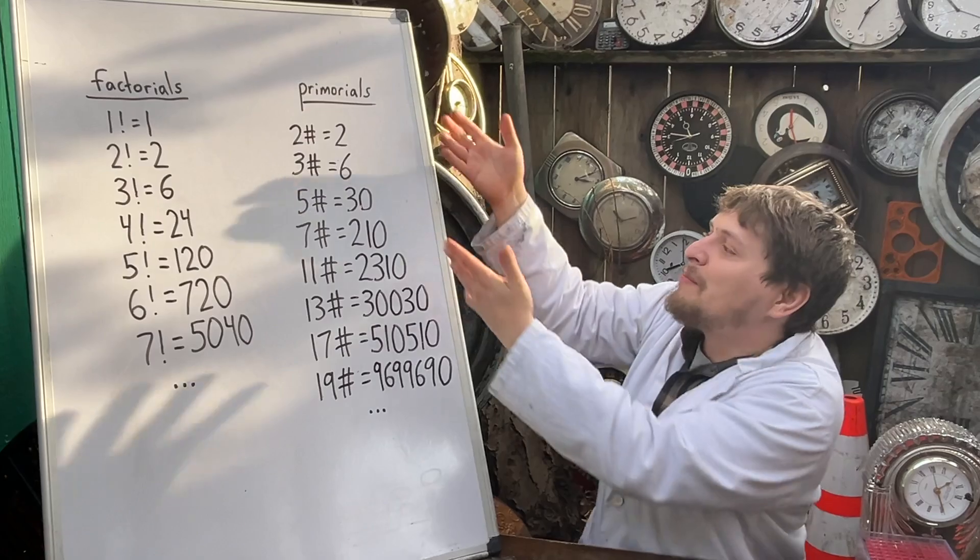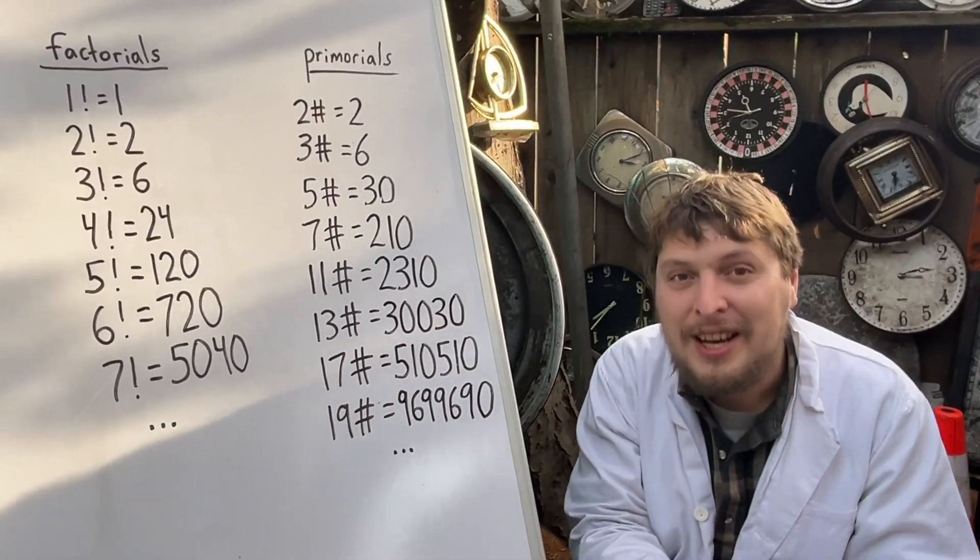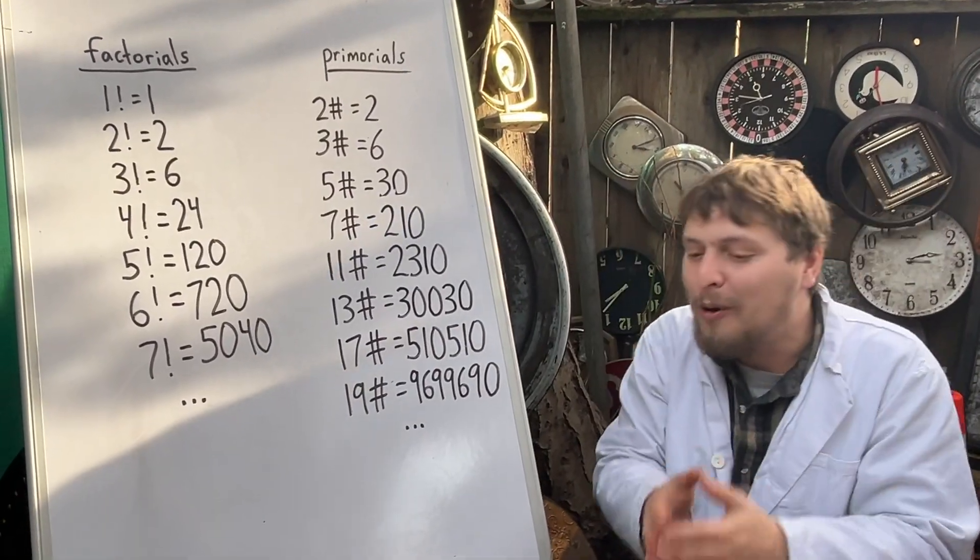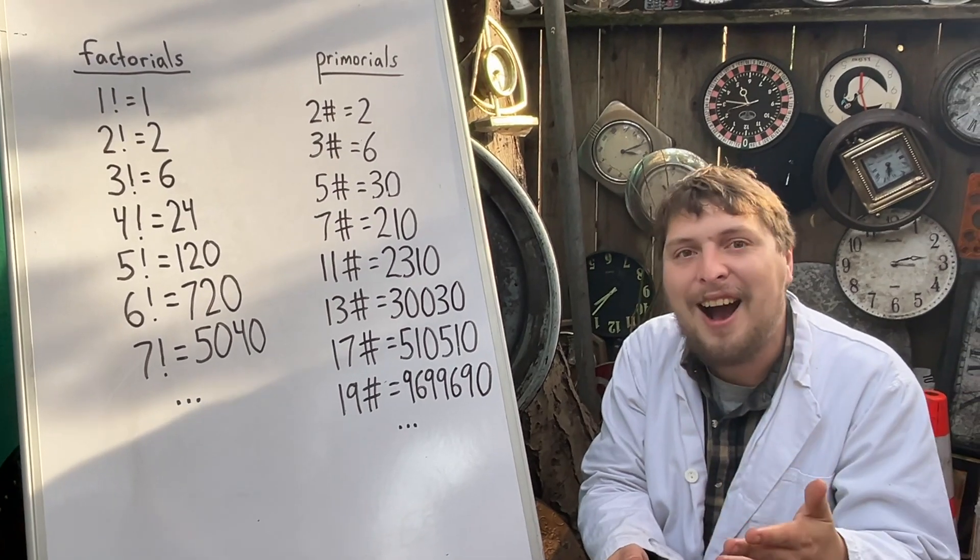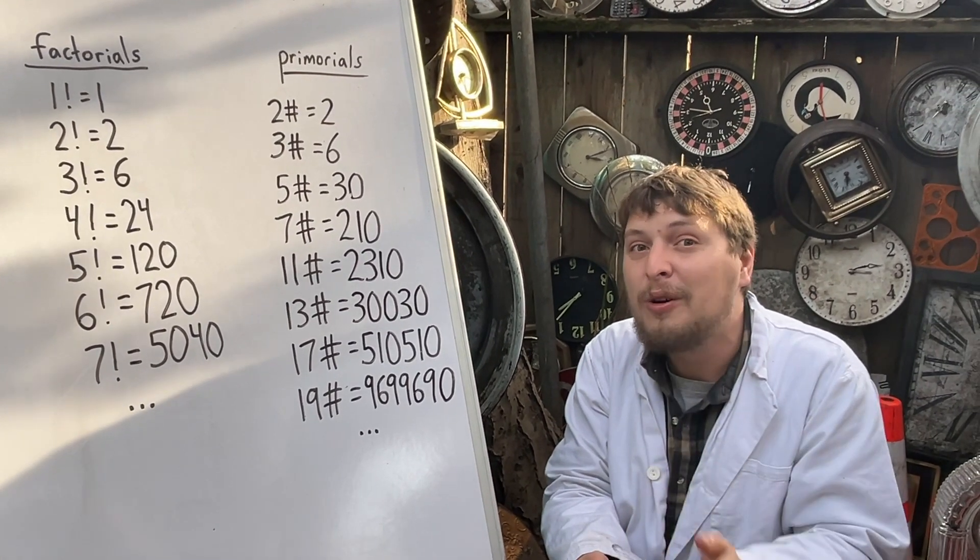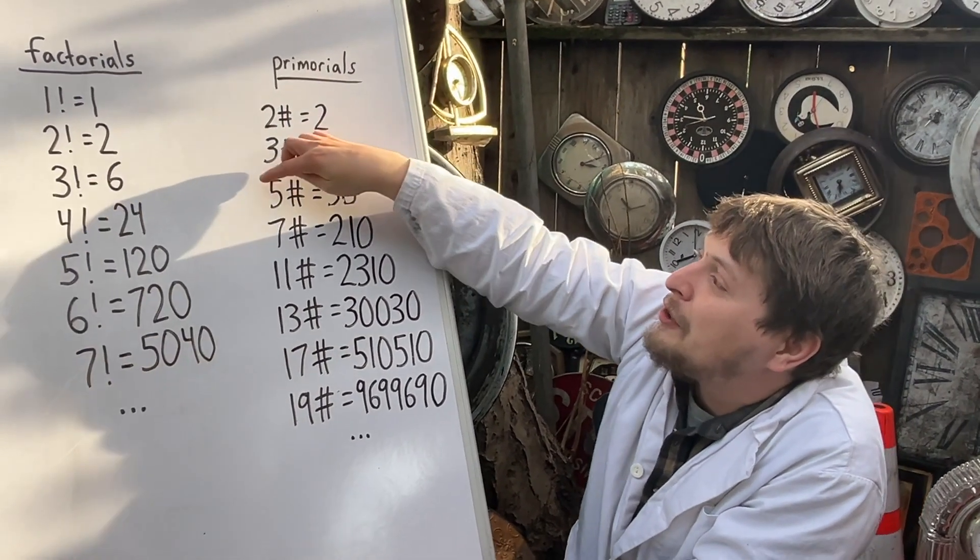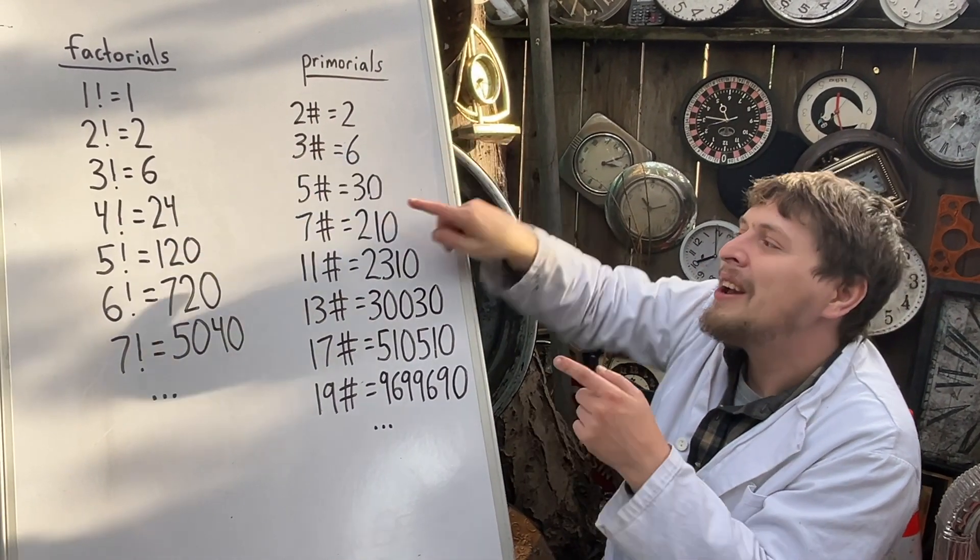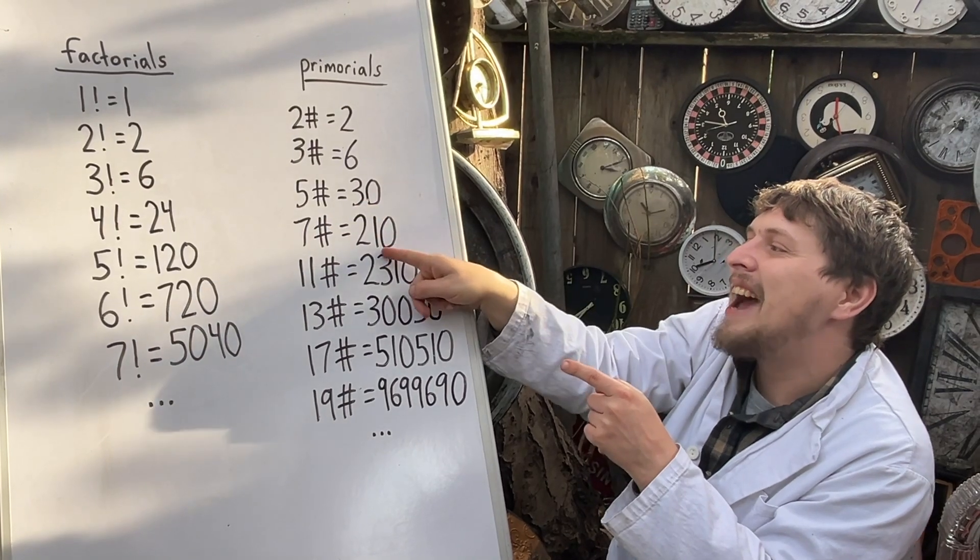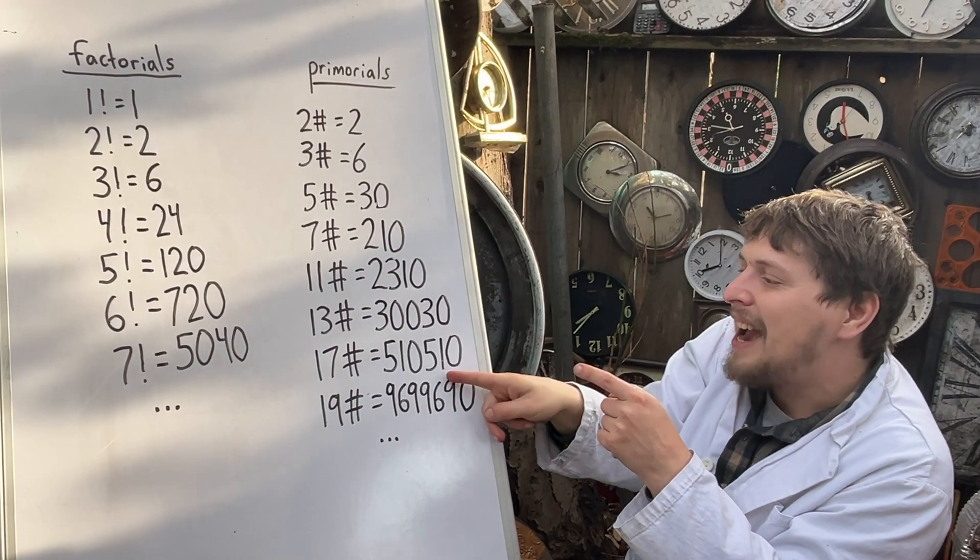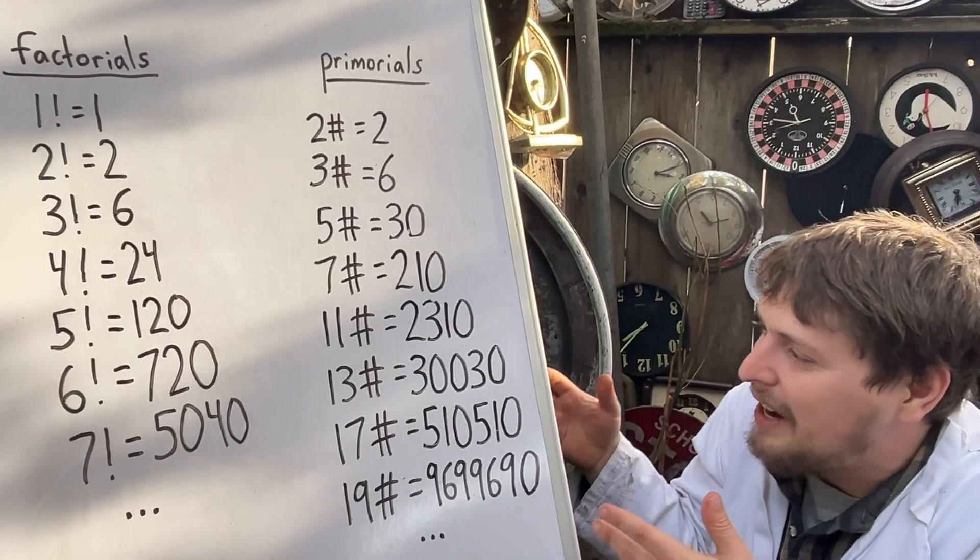Similarly to primes themselves, near the end of a primorial, we must have a 1, 3, 7, or 9, except for the cases of the very first few, except now it's the digit next to the zero, the second last digit that will have that trait.